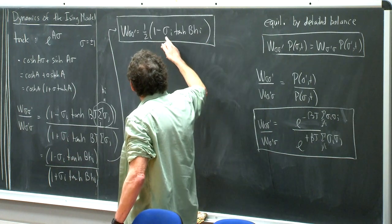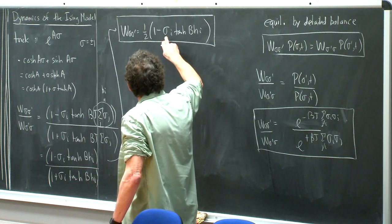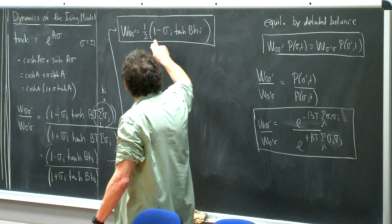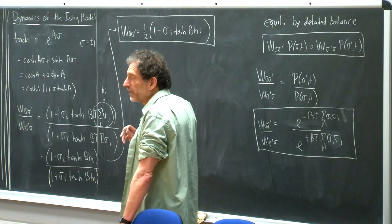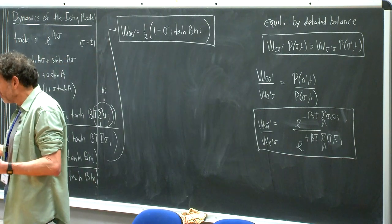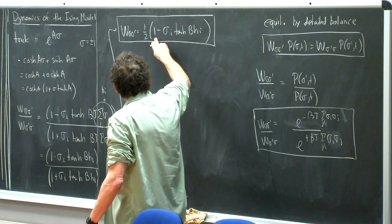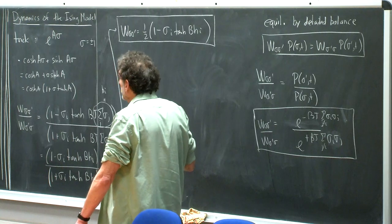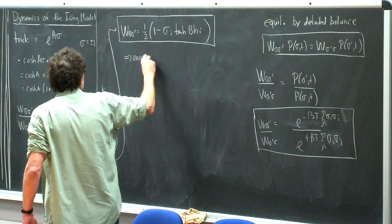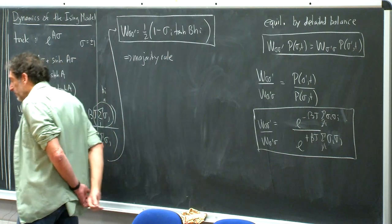A student observes: right at the critical temperature, ṁ ≈ -m³/3, so when you solve it you should get m ~ 1/√t. The lecturer confirms this is correct and says they're about to derive it. At β < 1 (above the critical temperature), there are no other fixed points and at long times we only care about behavior close to the origin.